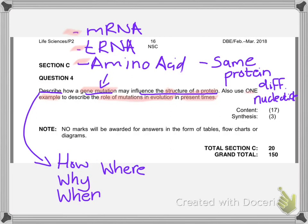That covers roughly the first paragraph. It's quite dense, and you'll see when we show the memo how much information you actually need to give. Keep in mind that the content is out of 17 marks, and the first paragraph is worth roughly 8 to 9 of those marks — and you can sometimes get multiple marks within a single sentence.